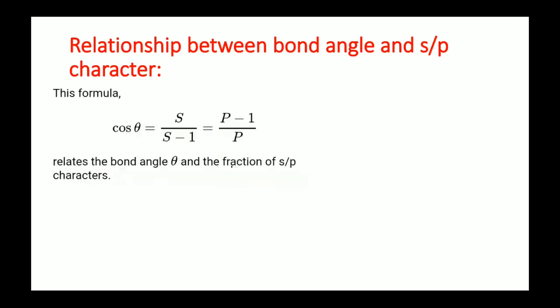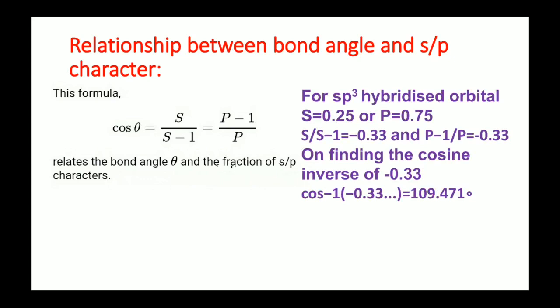What is the relationship between bond angle and S and P character? The formula is: cos θ = S/(S−1) = (P−1)/P, where θ is the bond angle, capital S is the percentage of S character, and capital P is the percentage of P character of a bond. For example, an sp³ hybridized orbital has S character 0.25 and P character 0.75, so S/(S−1) = −0.33, which equals (P−1)/P. Taking cos inverse of −0.33 gives 109.471°, which is the bond angle of the sp³ hybridized orbital.